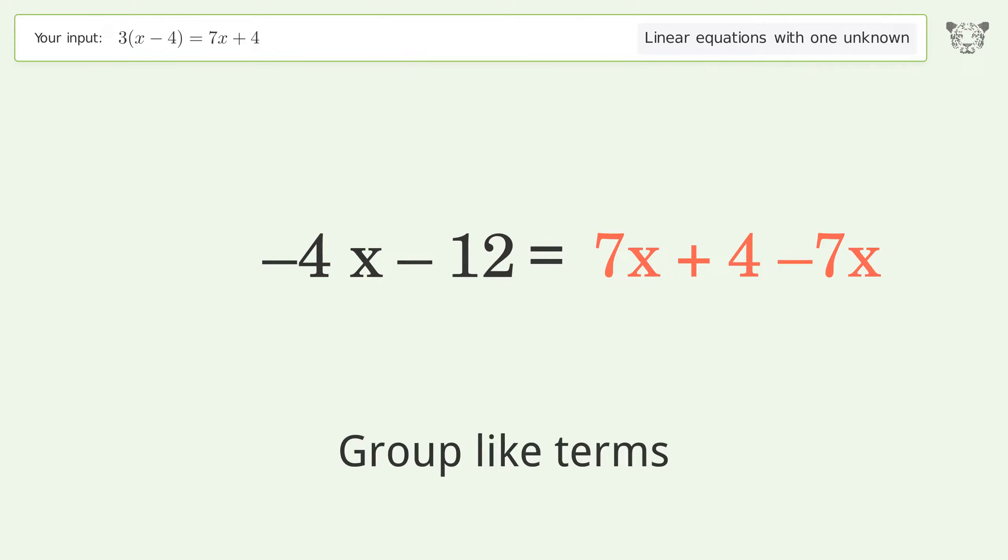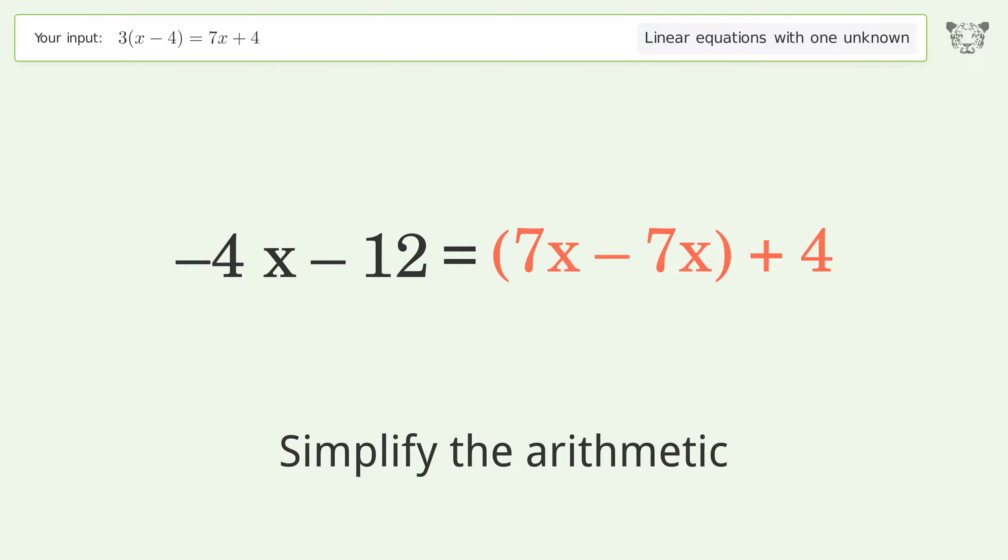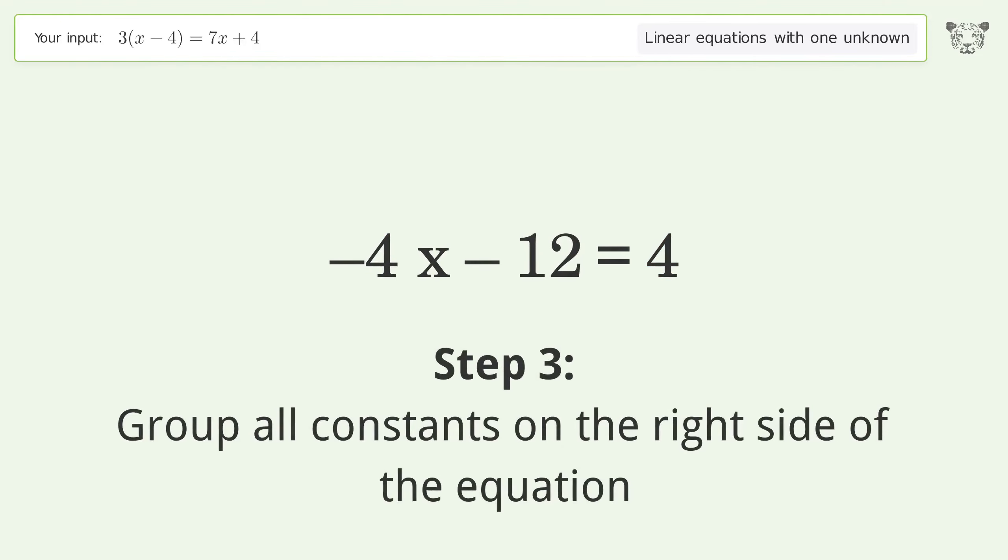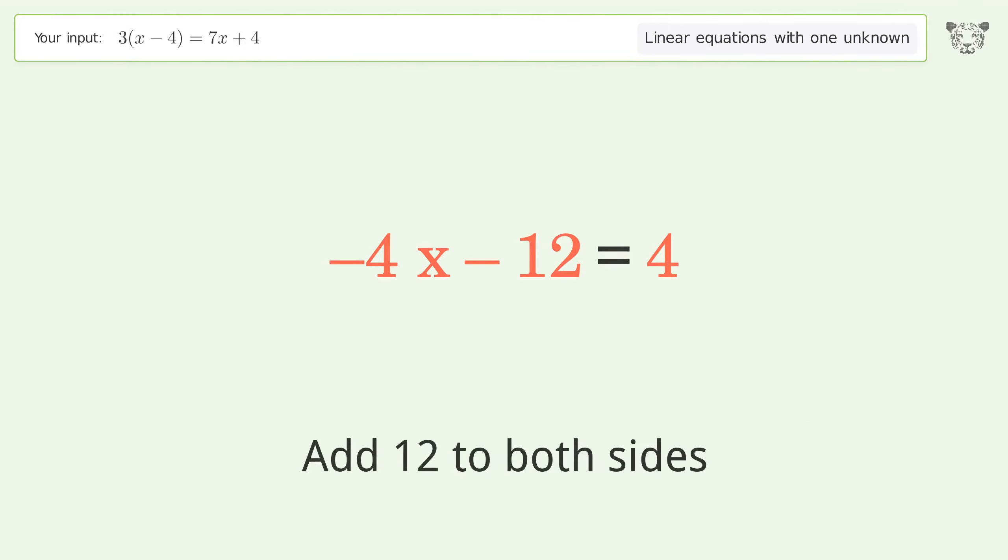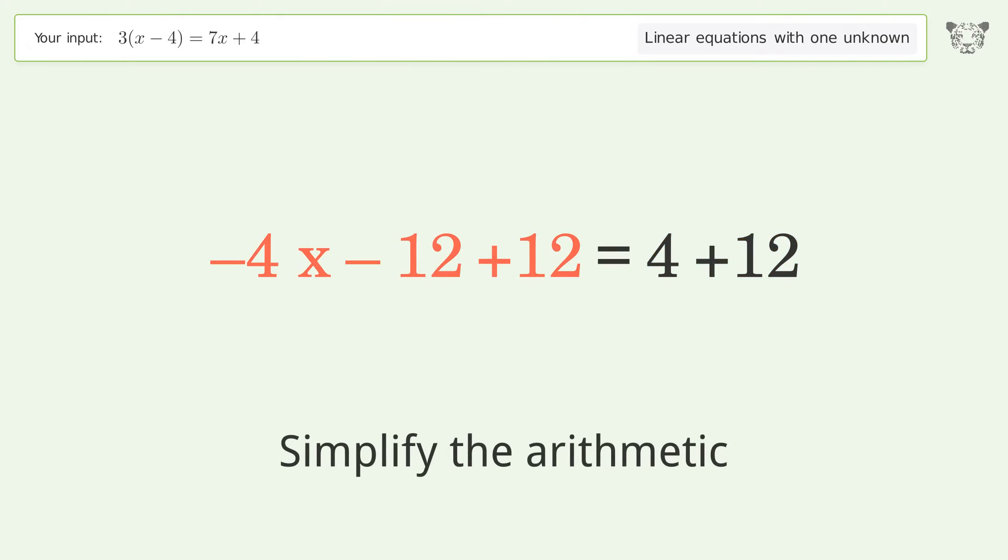Group like terms and simplify the arithmetic. Group all constants on the right side of the equation by adding 12 to both sides, then simplify the arithmetic.